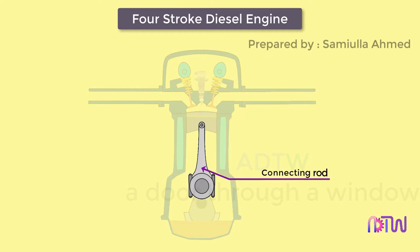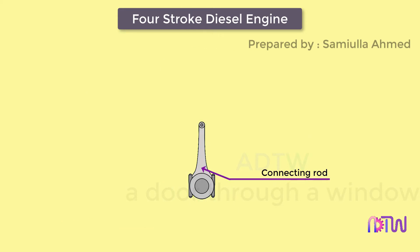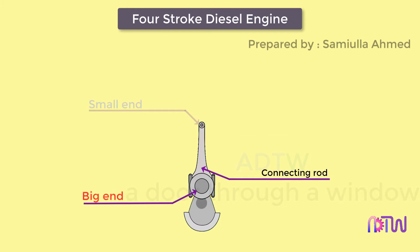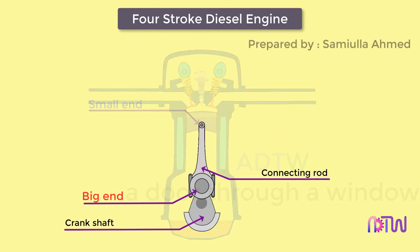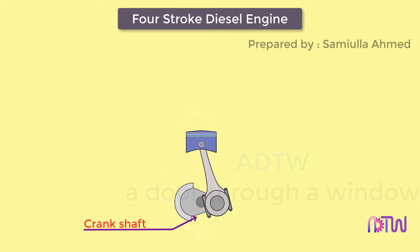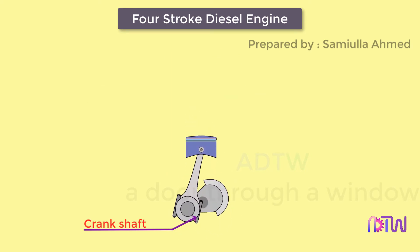The connecting rod interconnects the piston and the crankshaft and transmits the gas force from the piston to the crankshaft. Its two ends are called the small end and the big end: the small end is connected to the piston by a gudgeon pin, and the big end is connected to the crankshaft by a crank pin. The crankshaft converts the reciprocating motion of the piston into useful rotary motion of the output shaft.